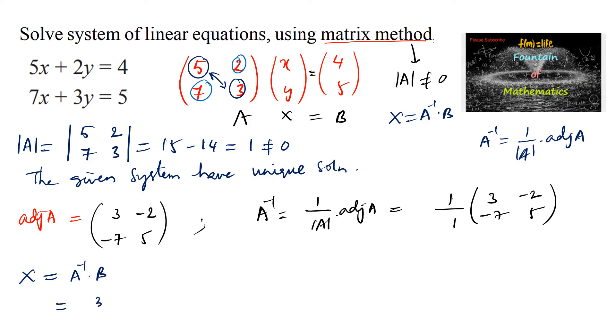Hence X equals A inverse times B. We can write A inverse as [3, -2; -7, 5] multiplied with matrix B, which is [4; 5].